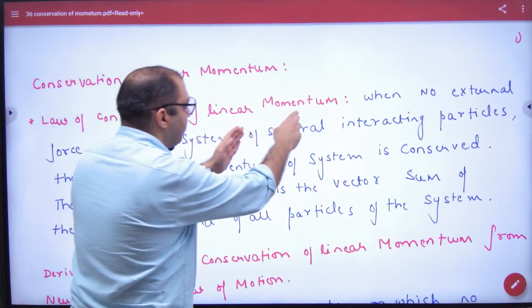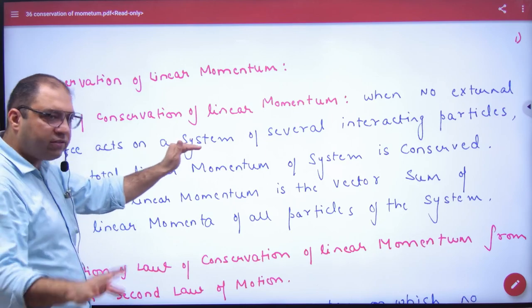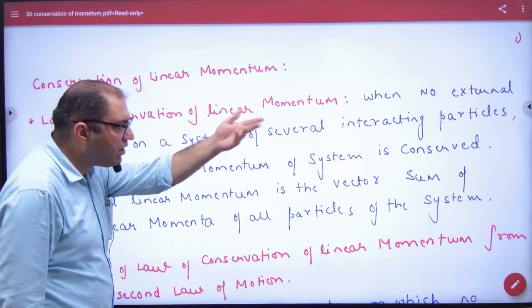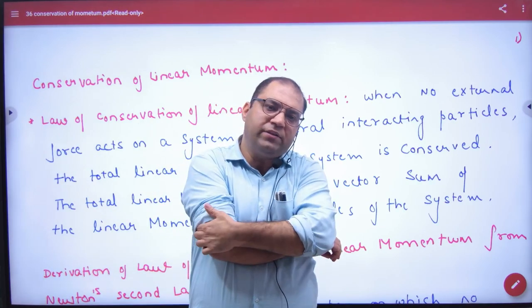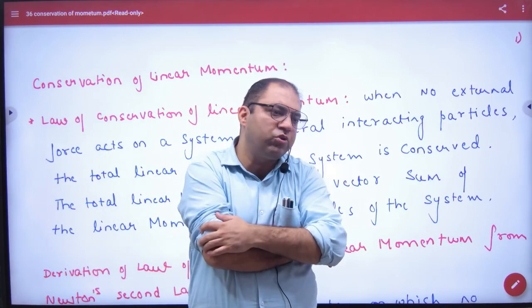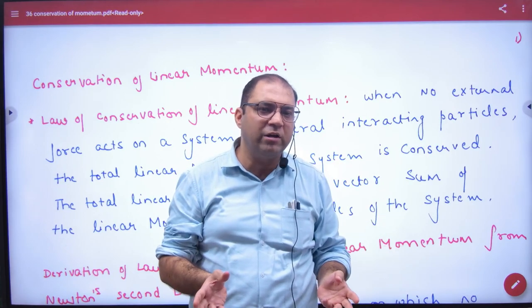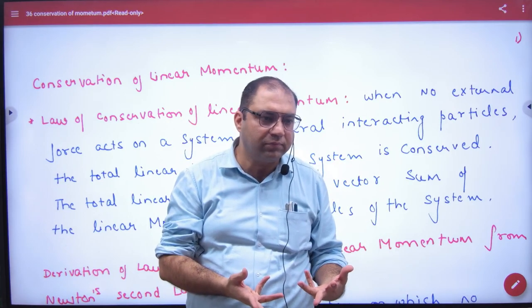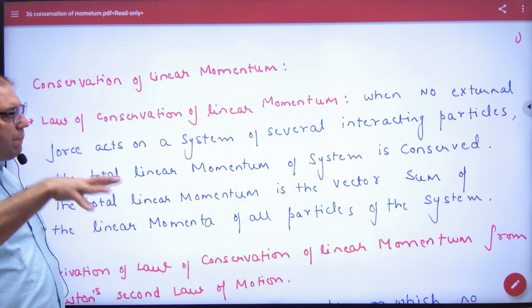So in the law of conservation of linear momentum, what will you write? When no external force acts on a system of several interacting particles. Because I have taken two or three particles, he said that you need to do n collisions, n balls. And we will not be able to do so much. So I said that the particles are not different. If the external force is zero,